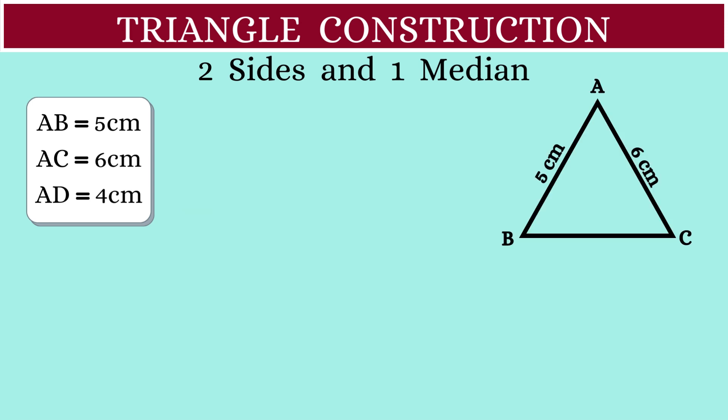So this is our triangle ABC with median AD. Since AD is the median, D has to be the midpoint of BC.